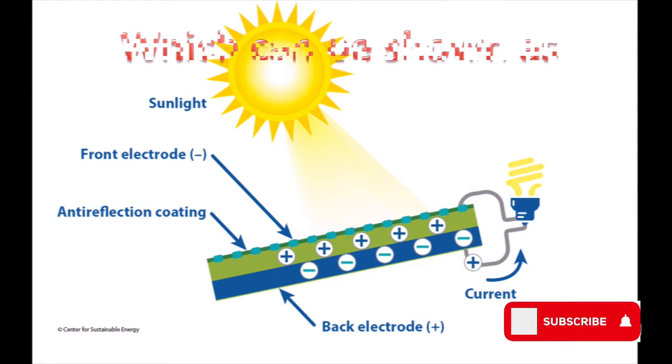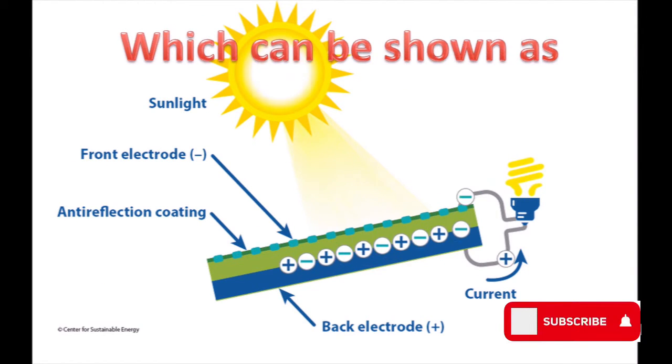The structure of a solar panel can be shown as sunlight falling on a non-reflecting surface.